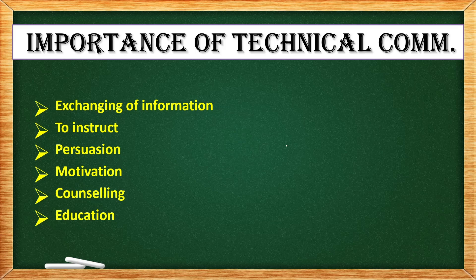Basically, whenever technical communication takes place in an organization, information is exchanged between different levels of hierarchies — like senior employer and employee — they interact with each other. When they are interacting or doing the process of communication, information related to the company, or maybe related to work, rules and regulations, gets exchanged. Without information, it is very difficult to work in the organization.